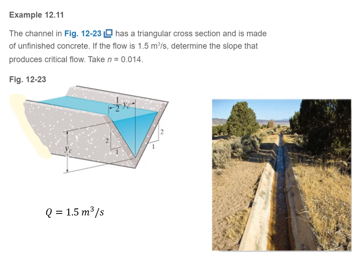Last example, 12.11. This channel has a triangular cross section that's made of unfinished concrete. If the flow is 1.5 cubic meters per second, determine the slope that produces the critical flow. Take n to be 0.014. Here shows you a little diagram of a triangular cross sectional channel. Notice in the diagram here, he's actually given us the slope. You can use Pythagorean Theorem or you can calculate this angle here. The tangent of this is 2. It's 2 divided by 1 is just 2. You can use those to calculate the perimeter and the area.